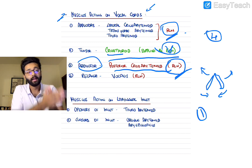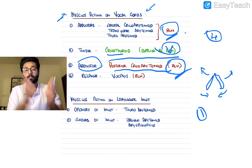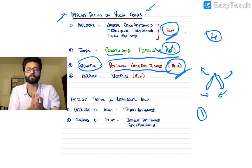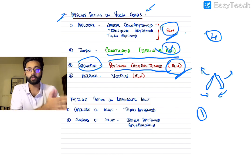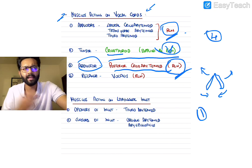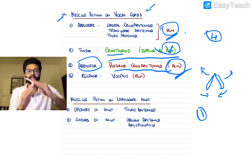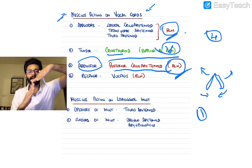To summarize: external laryngeal nerve injury causes only voice change. Unilateral recurrent laryngeal nerve (RLN) injury also usually only causes voice change. But bilateral RLN injury can be fatal.